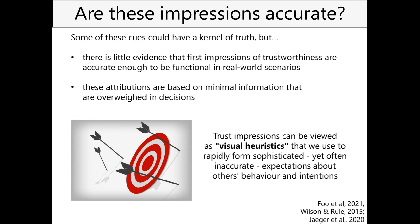So a question I really get asked a lot is: are these impressions actually accurate? Should I use them or not? Well, even if some of these cues could have a small kernel of truth, there is really little evidence that first impressions of trust are accurate enough to be functional in everyday life. These facial evaluations are based on minimal information - for example, subtle emotional expression - that ends up being overweighted in decisions. We can think of trust impressions as a sort of visual heuristic that we use to form sophisticated but also inaccurate expectations about another person's behavior.